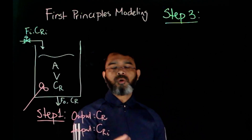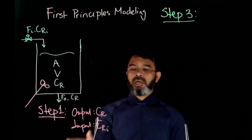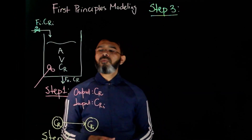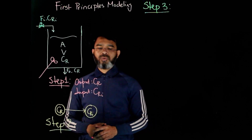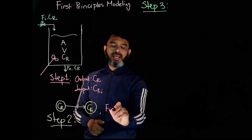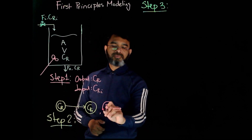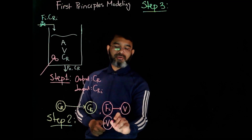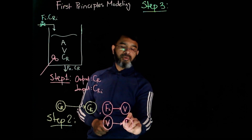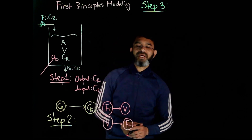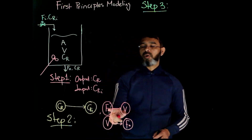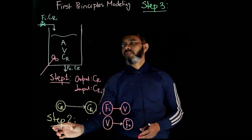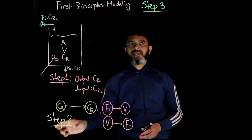The only way you can maintain CR is by manipulating CRi, the inlet composition. So for this case, the output will be CR and the input will be CRi. The relation can be captured by the model equation. However, other variables will also be related: Fi will affect V (or h), and V will affect F-naught. Those relations will be useful, but there will be no correlation between Fi and CR.